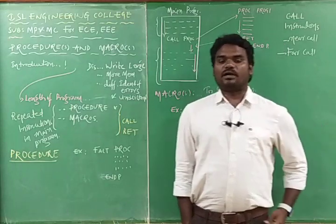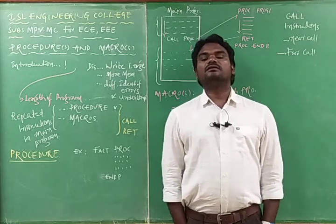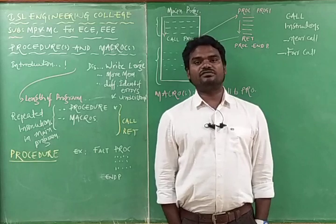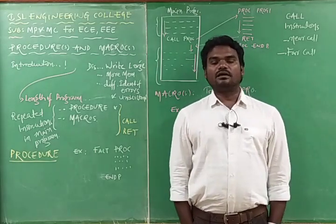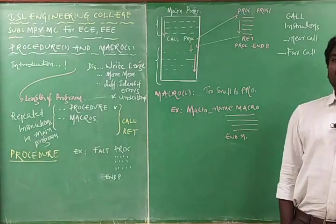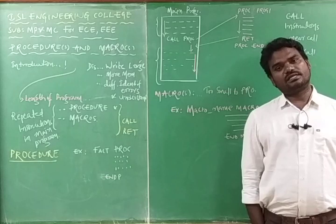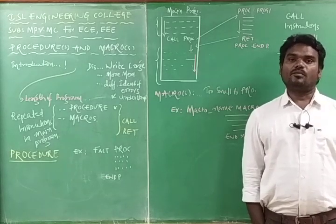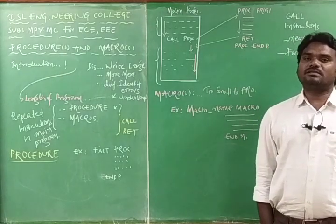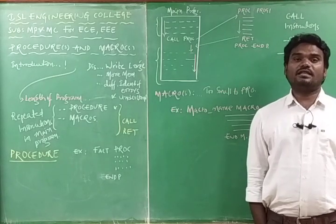Good morning students, welcome back to the online micro professor and microcontroller video lectures. In the last class we discussed assembler directives, covering nine of them. Here we are going to continue the same topic with two more assembler directives. Assembler directives are short forms of English words which give directions to the assembler to understand the assembly language and create the proper machine code.